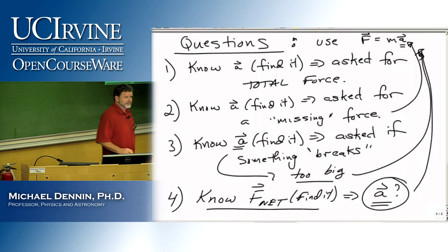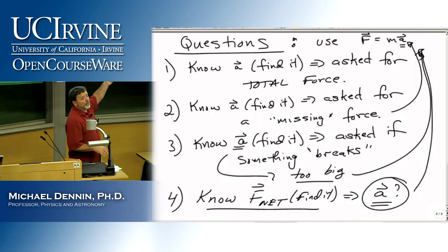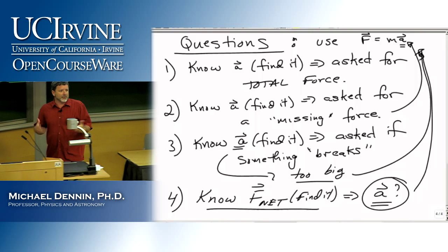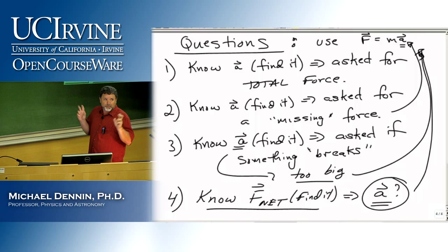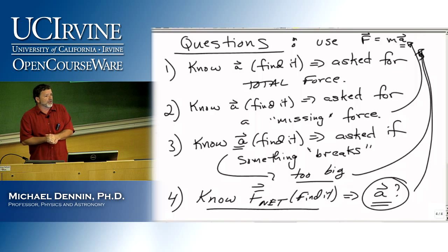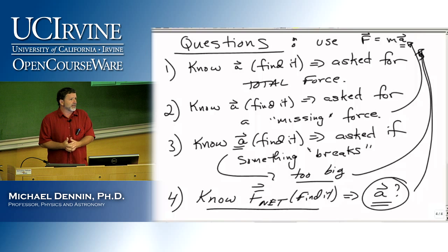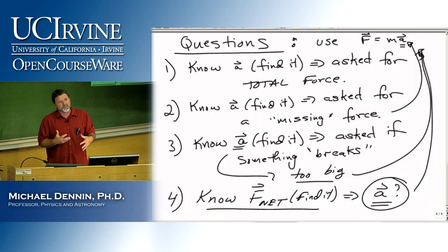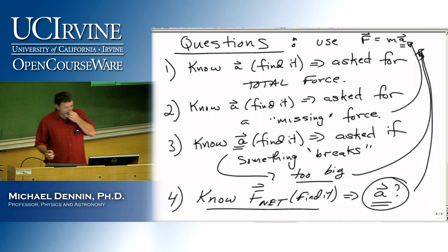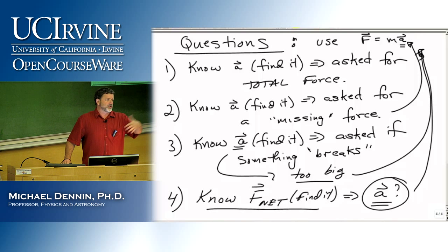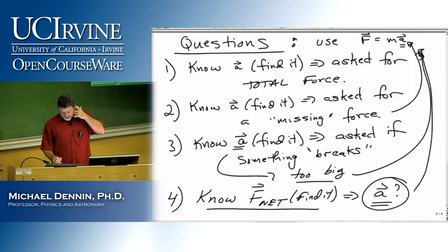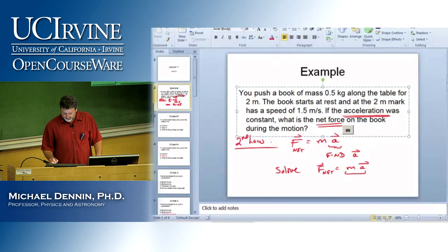For the breaking problem, you're usually given the minimum force required to break the object — that's how you know you're in that type of problem. It'll say something like 'a rope can only support 100 Newtons — Spider-Man swings on the rope, does it break or not?' Usually it's Tarzan or Spider-Man swinging, and it typically happens when they have to catch someone — they're swinging fine, then they have to hold someone else, and now does it break?